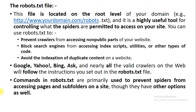When you replace your file with the robot.txt file, it prevents the crawler from accessing non-public parts of your website. It blocks the search engine from accessing index scripts, utilities, and other types of code, and it avoids indexing of duplicate content available on the website. There are several types of search engines — Google, Yahoo, Bing, Ask — all valid for the crawler. When you use the robot.txt file, you can set follow parameters or instructions for crawling purposes. Commands in the robot.txt file are primarily used to prevent the spider from accessing pages and subfolders on the website.